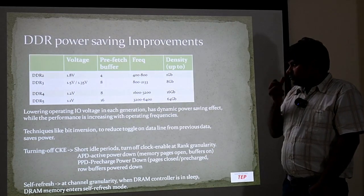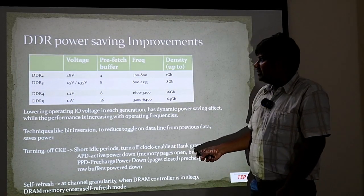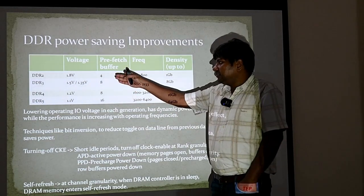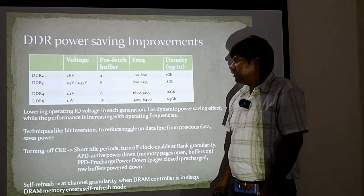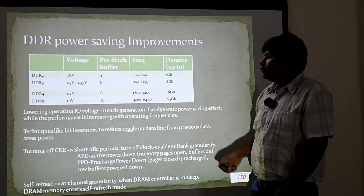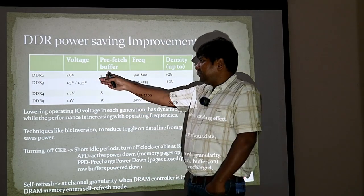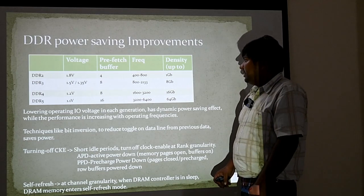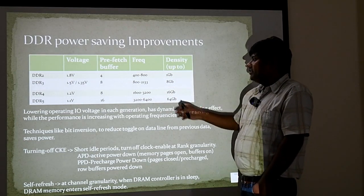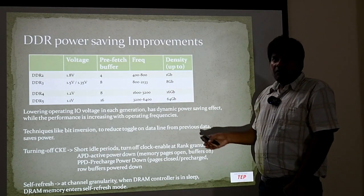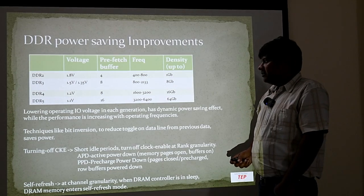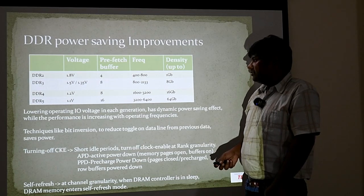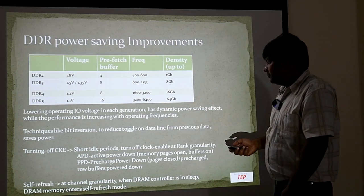First, looking at DDR technology, we can see that the I/O voltage is reducing as the technology progresses from DDR2 to DDR5. Voltages have reduced from 1.8V to 1.1V while performance is increasing. We can correlate this with concepts discussed so far — dynamic power or switching power reduces while performance gets better and better.